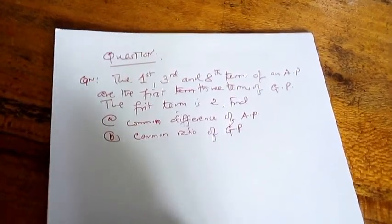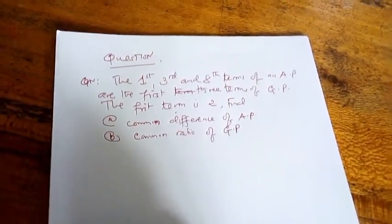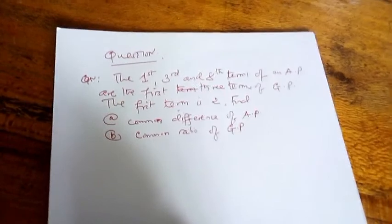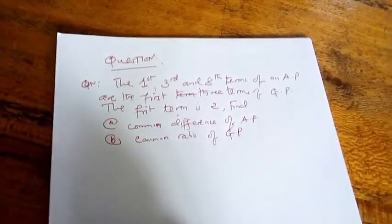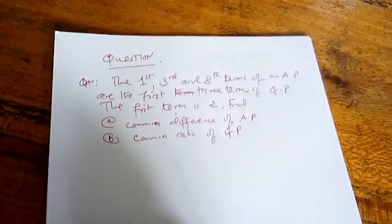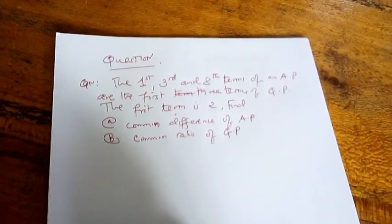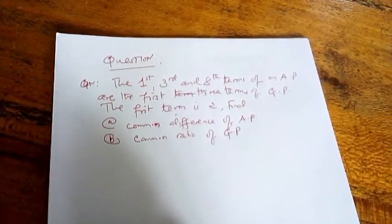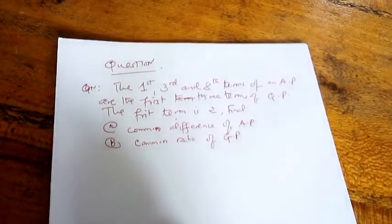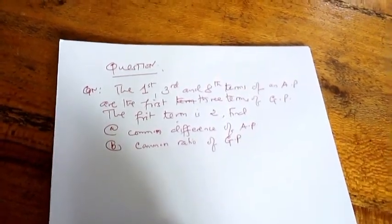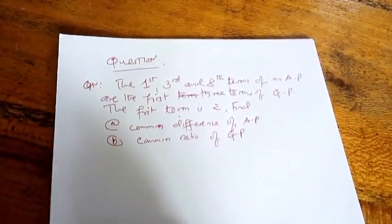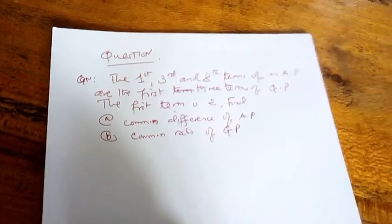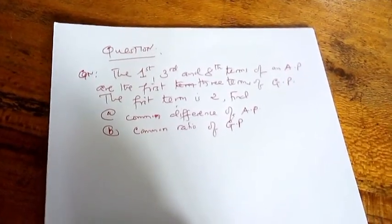First of all, you have to know the needs or the demands of the question. The question is to find the common difference, which is the similar difference between the first term, the second term, the third term, and so far. And the common ratio is a ratio or difference in geometrical progression which is denoted in terms of R, but common difference is denoted in terms of D.